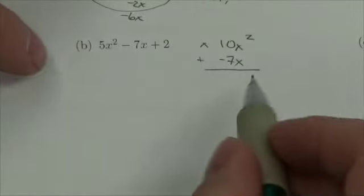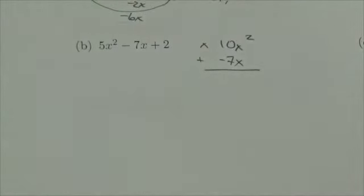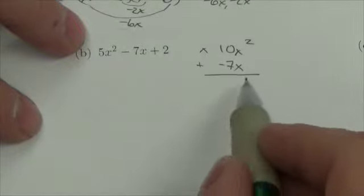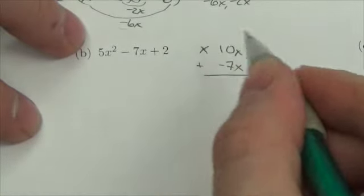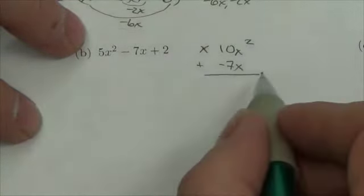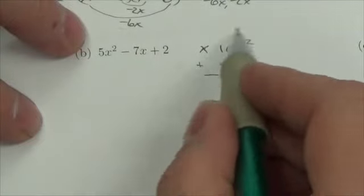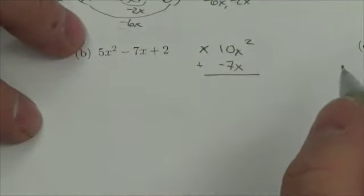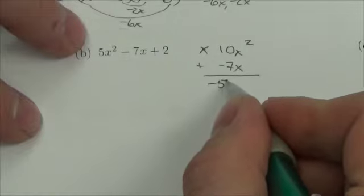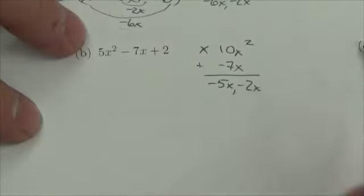As I've said before, you might be using a different method of factoring, but at some point you're going to bump into this question about what two numbers multiply to get 10x² and add to get negative 7x. In this case, I hope it's pretty clear that it's got to be negative 5x and negative 2x.